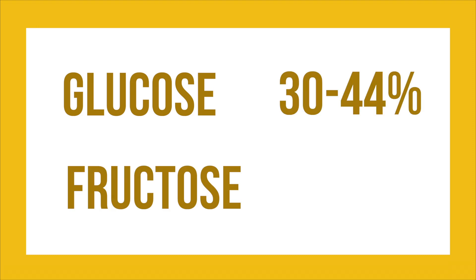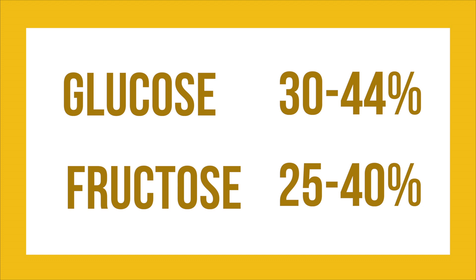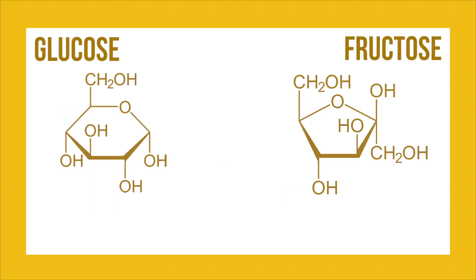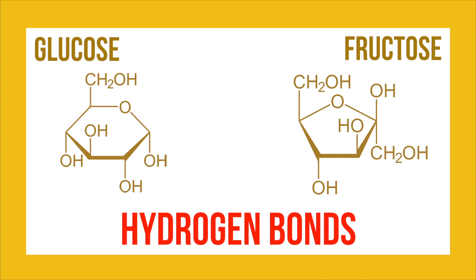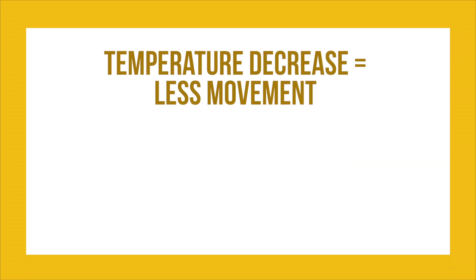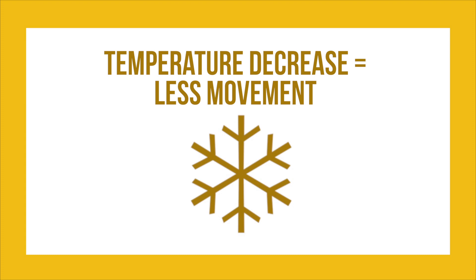Honey is made out of two sugars: glucose and fructose. 30 to 44% of honey is made out of glucose and 25 to 40% is made out of fructose, meaning these two sugars play a large role in what makes up honey. Fructose and glucose both crystallize very easily because of their ability to make hydrogen bonds. They have oxygen and hydrogen groups attached to them, which attract other molecules to bond intermolecularly with the sugar. When the temperature of the solution is cooled down, the sugar molecules move less quickly, creating more opportunities for hydrogen bonds to form between sugar molecules and creating solid crystals.